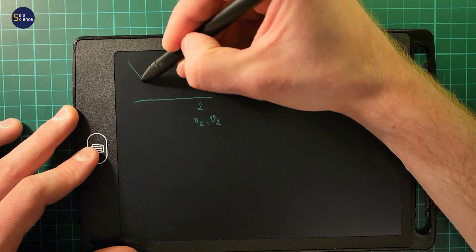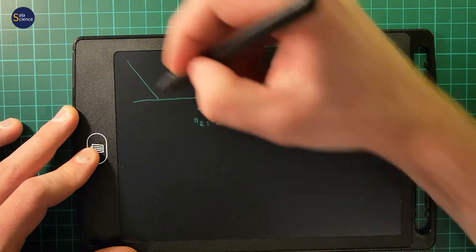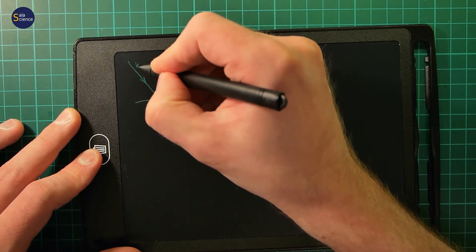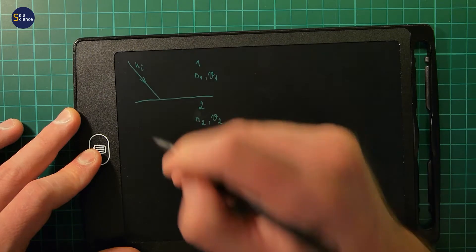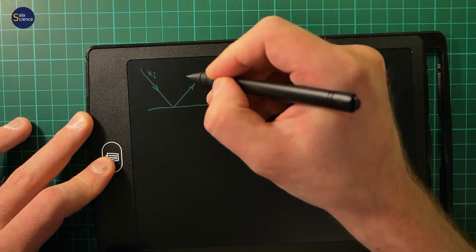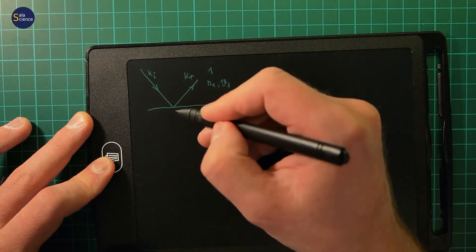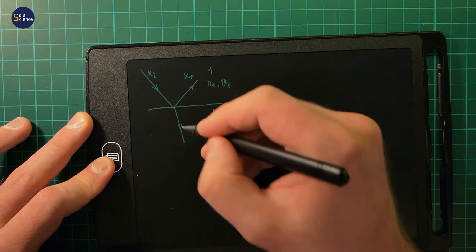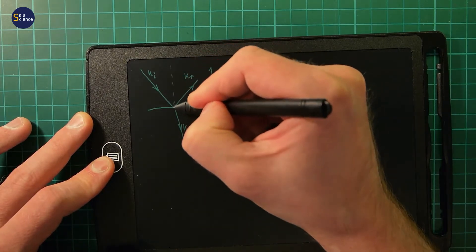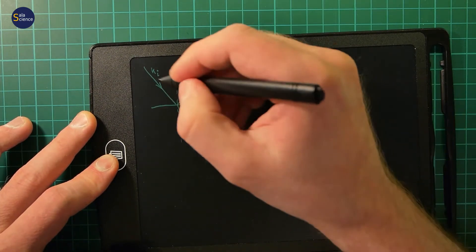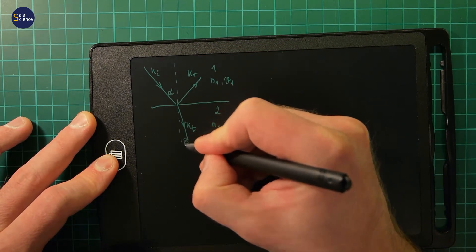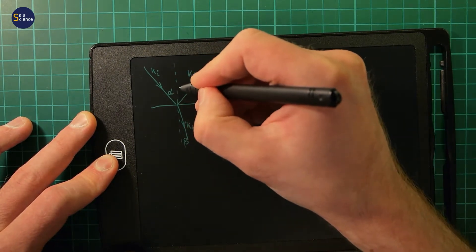Let's consider light falling at this boundary, so we'll have some wave vector ki for the incident wave, some reflected wave kr, and some transmitted wave kt. Let's say we have here angle alpha, here angle beta, and here angle gamma.